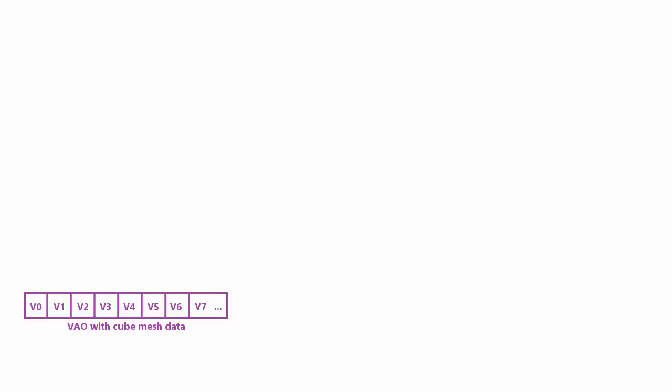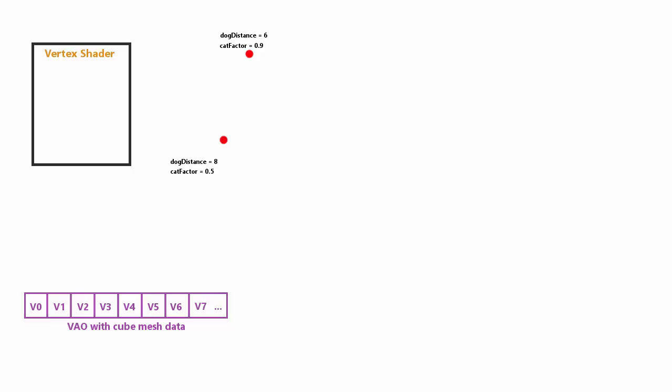Let's say we want to render a simple cube. The first stage of the pipeline is the vertex shader, which takes in each vertex of the model and processes them individually. The vertex shader gets its input data for each vertex from the VAO, and it outputs the vertex with various user-defined values. It also sets the inbuilt gl_Position variable, which tells OpenGL where on the display the vertex should be positioned. OpenGL then assembles the primitives from the outputted vertices.